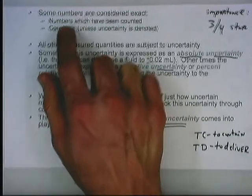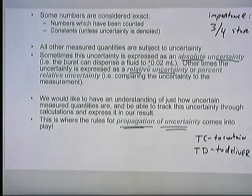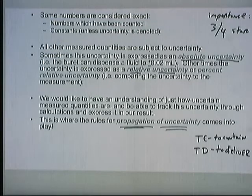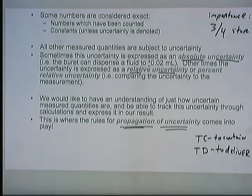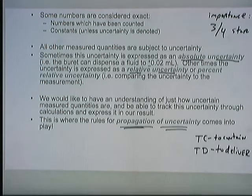Certain numbers are considered exact. These are things that have been counted—for instance, seven days in a week, or 24 hours in a day. Constants are also generally considered exact unless uncertainty is given to you. A good example might be atomic masses from the periodic table. Some periodic tables give you the uncertainty in those numbers, but we oftentimes treat them as constants otherwise.